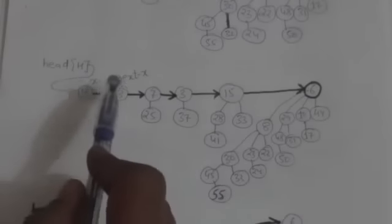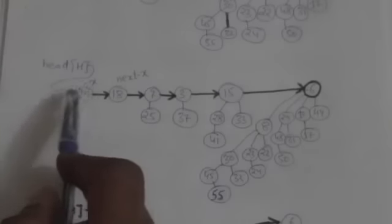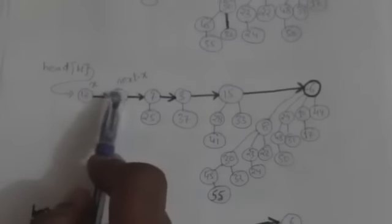In this case, the degree of x is equal to the degree of next x, but the degree of sibling of next x is different. So we will compare the key values of x and next x. Here the value of the key of x is less than the value of the key of next x. So we will remove next x from the root list and make it the leftmost child of x. Here we have removed next x from the root list and made it the leftmost child of x.